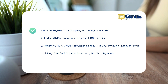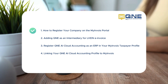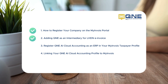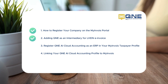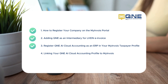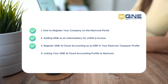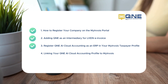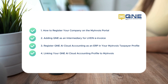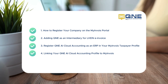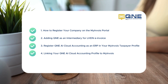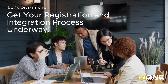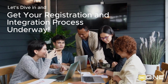1. How to register your company on the MyInvoice portal. 2. Adding Q&E as an intermediary for LHDN eInvoice. 3. Register Q&E AI Cloud Accounting as an ERP in your MyInvoice Taxpayer profile. 4. Linking your Q&E AI Cloud Accounting profile to MyInvoice. Let's dive in and get your registration and integration process underway.